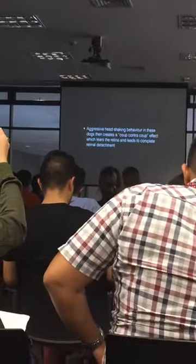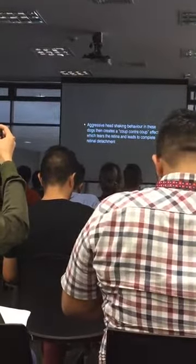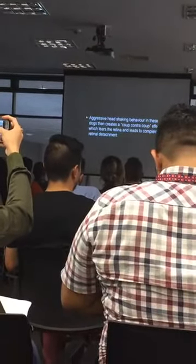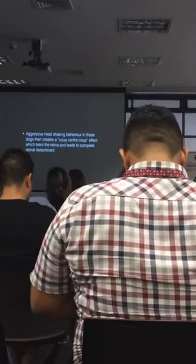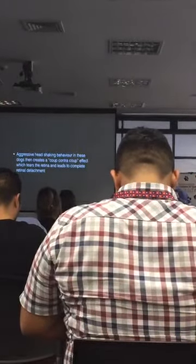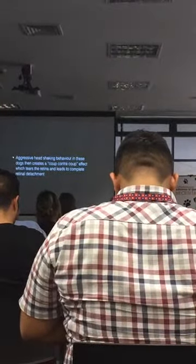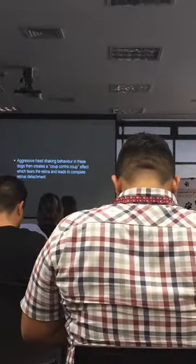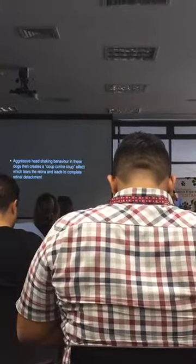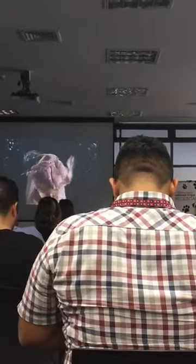Once it's liquefied, the retina's kind of sitting there. We think that the aggressive head-shaking behavior in these little Shih Tzus — lots of little dogs like to take a toy and shake their head — creates a coup-contrecoup effect, which tears the retina and often tears the blood vessels. That's why they end up with a vitreous hemorrhage. Once that retina is torn, the water that's there — no longer hydrogel — gets underneath the retina and lifts it up off the RPE. So it's a combination of the liquefaction of the vitreous and the head-shaking behavior.